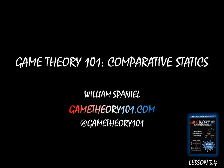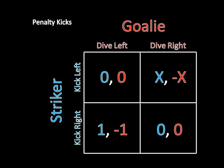In the last video we looked at a game of penalty kicks between a striker and a goalie, where the striker was perfectly accurate to his right side, but not so accurate to his left side — he only hits the goal with probability X, assuming the goalie misses on the dive. We found the mixed strategy Nash equilibrium for this game, but now let's go further and actually analyze the equilibria.